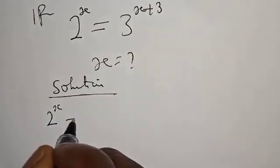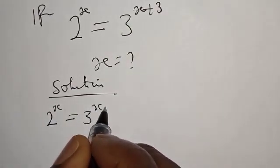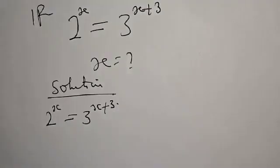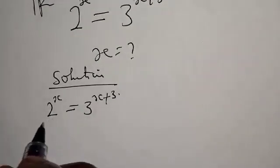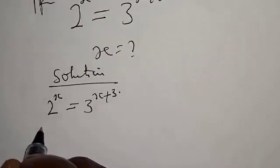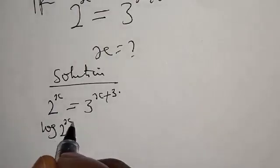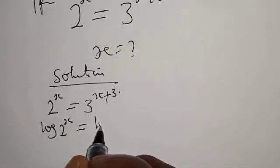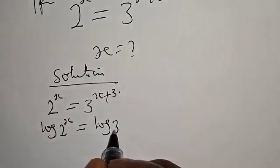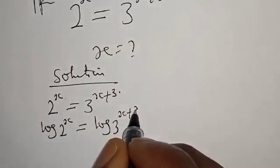2 raised to power x is equal to 3 raised to power x plus 3. I will take the log of both sides. Log 2 raised to power x is equal to log 3 raised to power x plus 3.